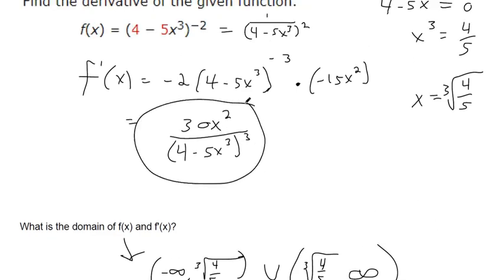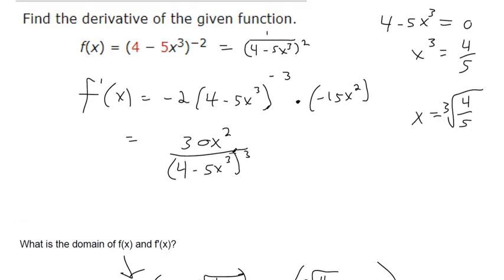Now the domain of the derivative will do the same type of thing. We want to avoid divide by zero problems. We want to avoid square roots of a negative. If you set the denominator equal to zero, we're going to get the same thing.